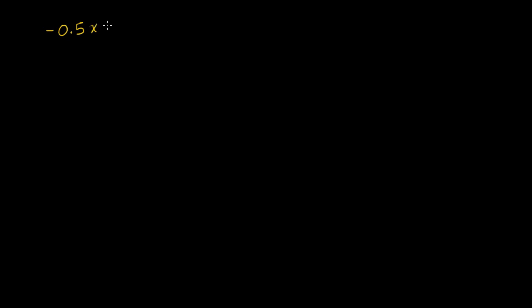So let's say I had negative 0.5x is less than or equal to 7.5. Now if this was an equality, your natural impulse would be to divide both sides by the coefficient on the x term. And that is a completely legitimate thing to do — divide both sides by negative 0.5. The important thing you need to realize, though, when you do it with an inequality, is that when you multiply or divide both sides by a negative number, you swap the inequality.